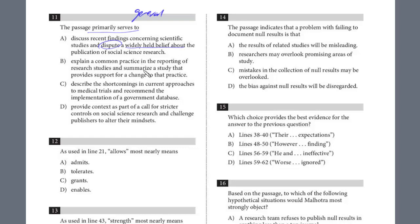Does this whole passage discuss recent findings concerning scientific studies and dispute a widely held belief about the publication of social science research? This is not accurate—it does not dispute a widely held belief. Answer B: explain a common practice in the reporting of research studies and summarize a study that provides support for a change to this practice. This is correct. You see how broad this answer is? There's no mention of null results. The common practice, that's the standard practice of not reporting null results. And then at the end, a solution was proposed to have that registry for all the experiments. Really broad language when you answer these general questions. The answer is B.